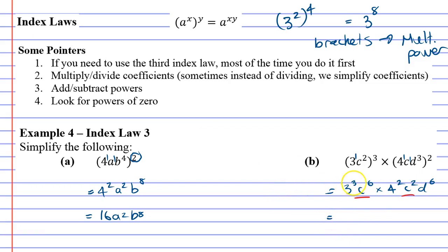So when we do this, we've got 3 to the power of 3 and 4 to the power of 2. We'll just write it as times. And then we've got our C. Now we've got a 6 and a 2—we're going to add them up to make 8 because index law 1 states that if you're multiplying, you add the powers. And then we've got D to the power of 6 all on its own, so it just stays the same.